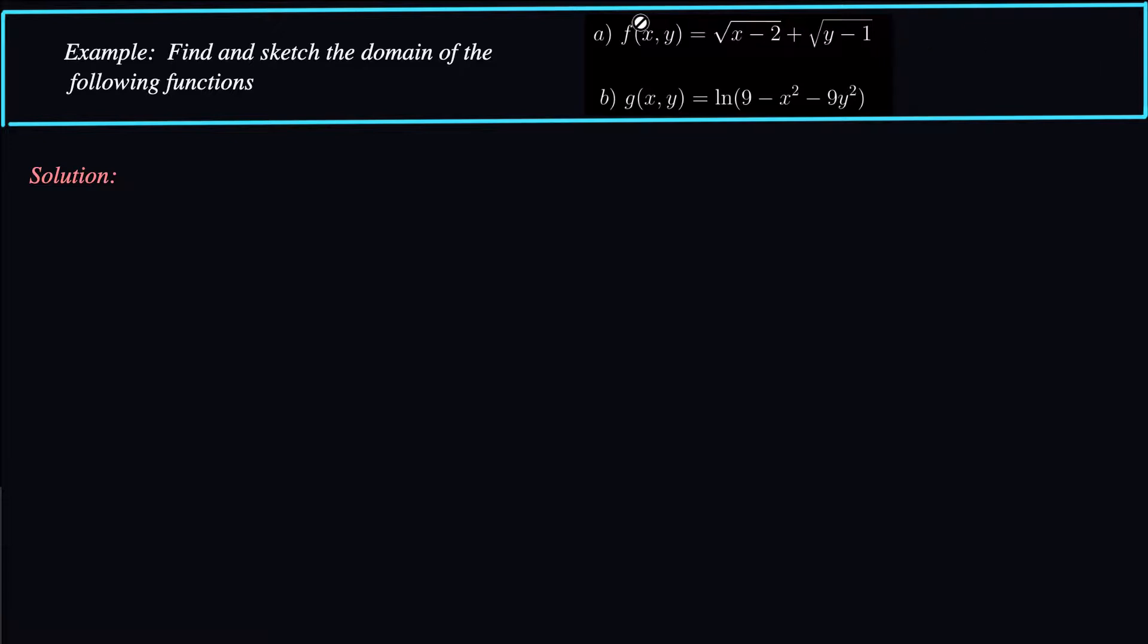So the first function that we have here, we want to find the domain of it, is f(x,y) equals the square root of x minus 2 plus the square root of y minus 1. The second function, natural log of 9 minus x squared minus 9y squared. So let's check this out, see how to do this.